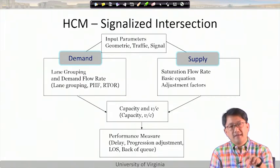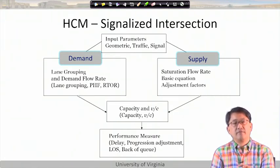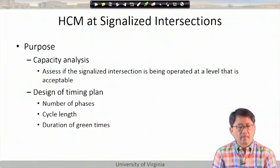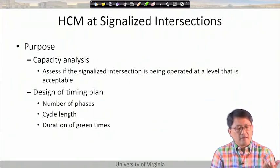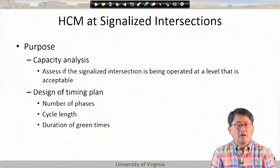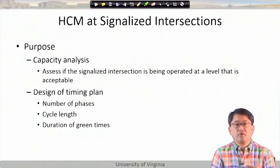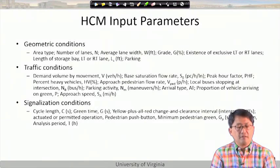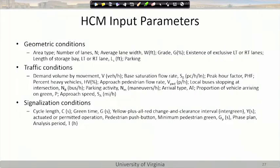HCM evaluates performance of an intersection with different geometries, volumes, and signal settings. Capacity analysis considers number of phases — from two-phase to eight-phase — and optimizes cycle length and green time durations. Inputs include geometry, number of lanes, area type. The CBD (central business district) has more activities and less throughput because of parking maneuvers, delivery vehicles, and so forth.